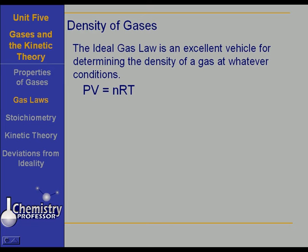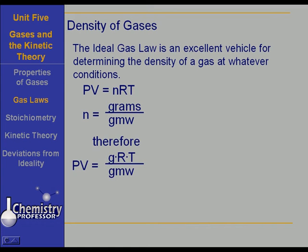We use the ideal gas law PV equals nRT. Remember, moles can be expressed several ways — in this case n, or moles, is going to be expressed as grams over gram molecular weight. So we rewrite the ideal gas law as PV equals GRT over gram molecular weight. Remember, density is mass per volume, so if we take mass as grams and volume as V and do a little rearranging of this...